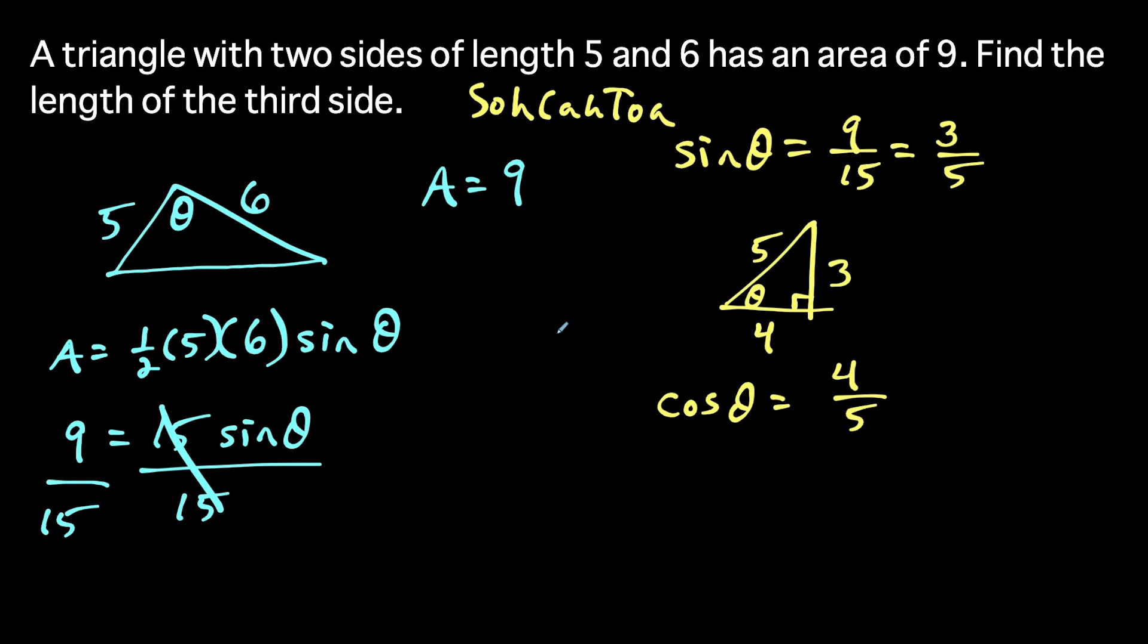So now we have to think about what information do we know. We know two sides of this triangle, and we know what cosine of theta is. So now we could use the law of cosines. And we're going to use the law of cosines with this side five, six, and the angle between them theta.